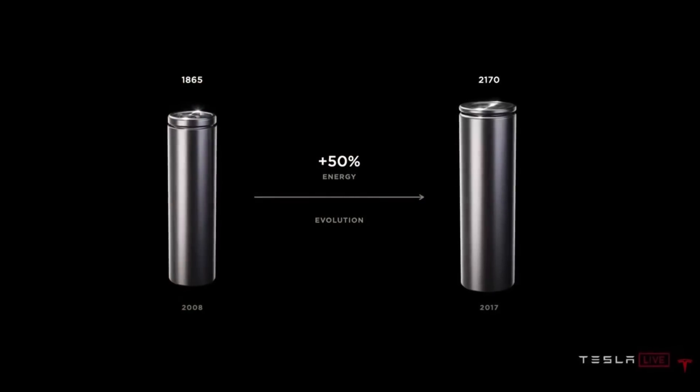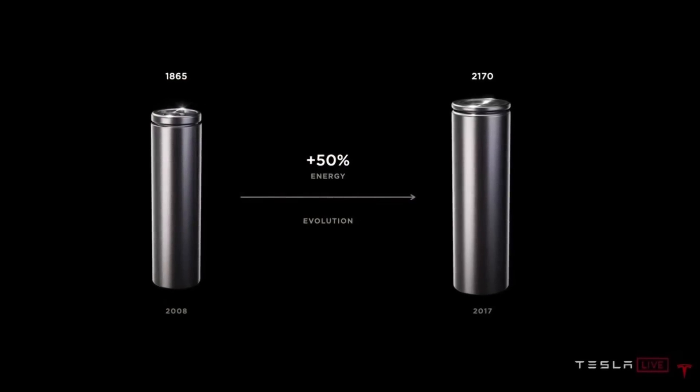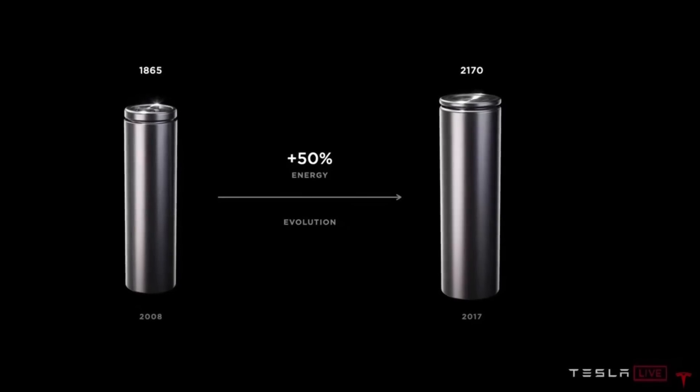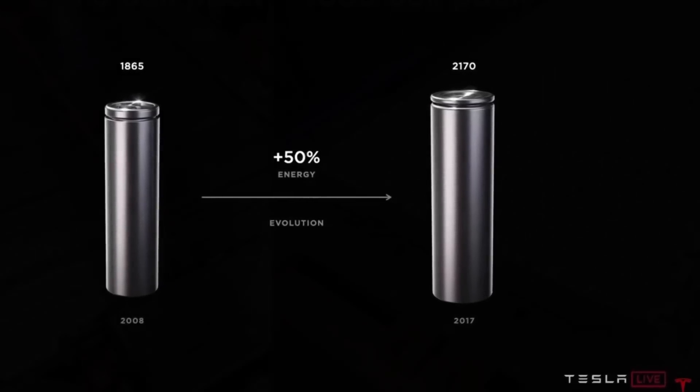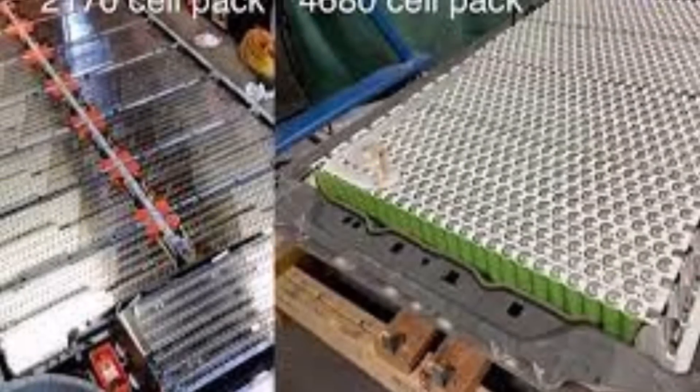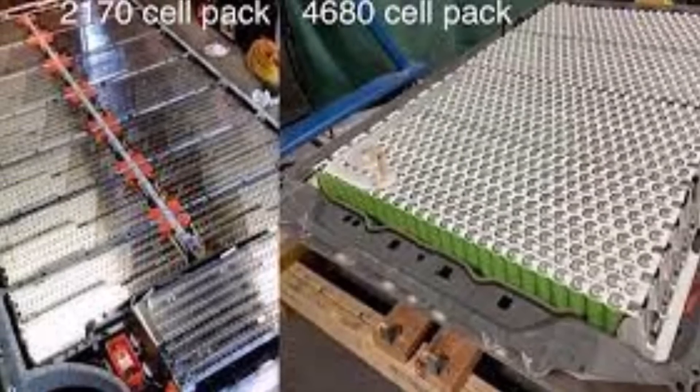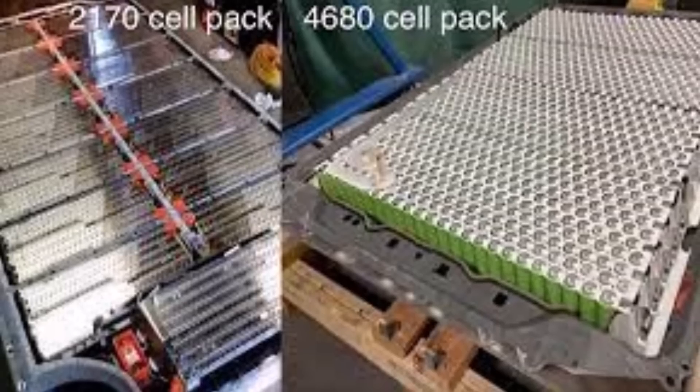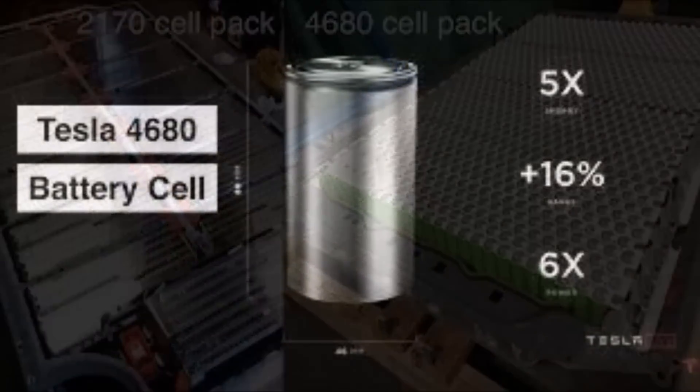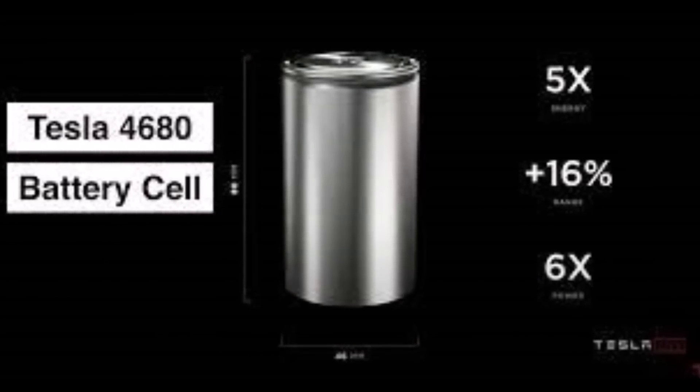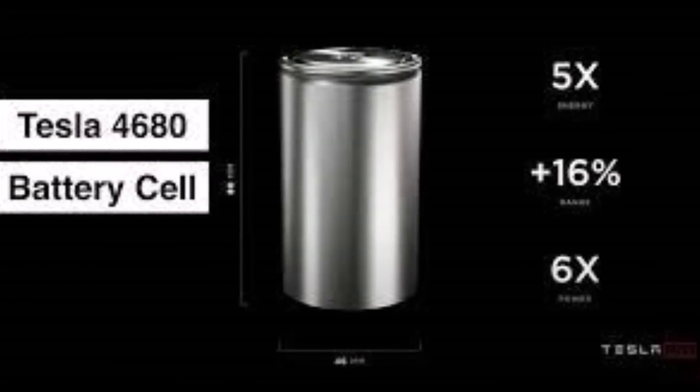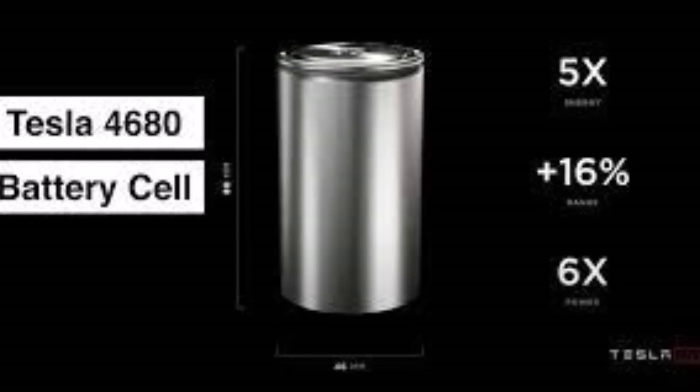Tesla's pilot battery line at Kato Road is starting to close in on the acceptable yield of factories like Giga Nevada. While the delays in the 4680 cells appear to have affected the rollout of products like the Cybertruck and the Semi, it is starting to become evident that Tesla is about to hit some respectable battery output from its pilot line in California.